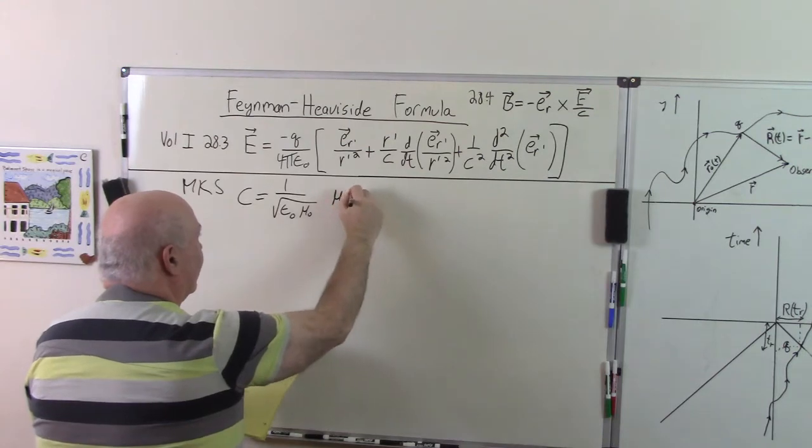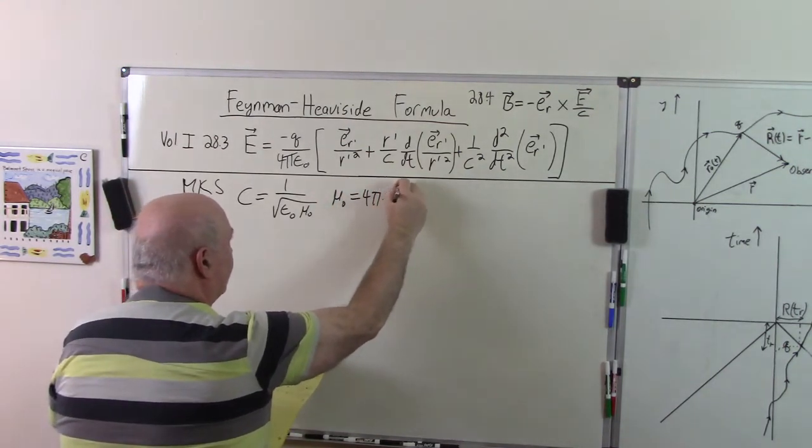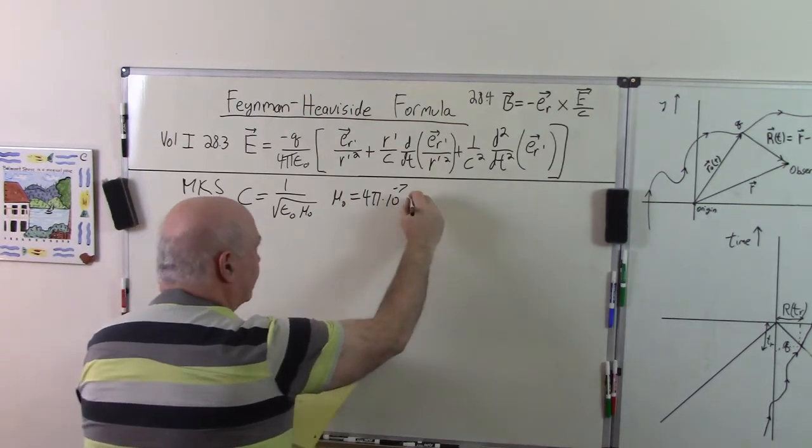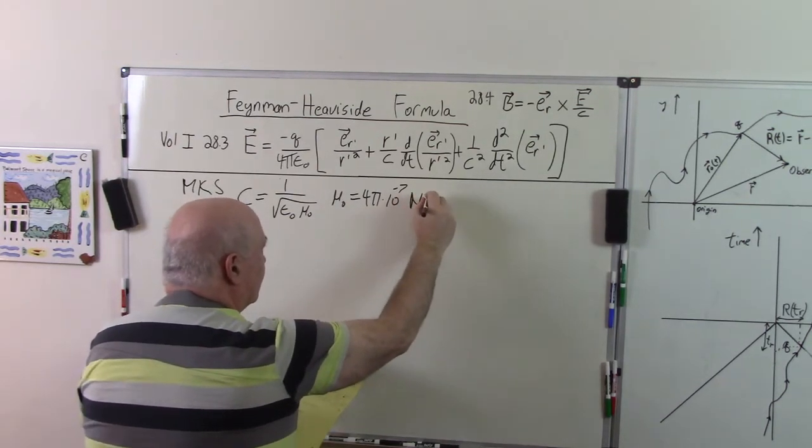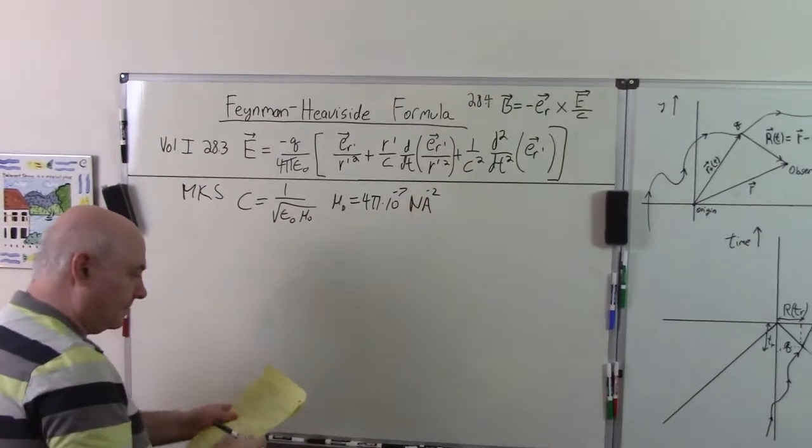Mu_0 is exactly defined as 4 pi times 10 to the minus 7. I think the units are newtons per ampere squared.